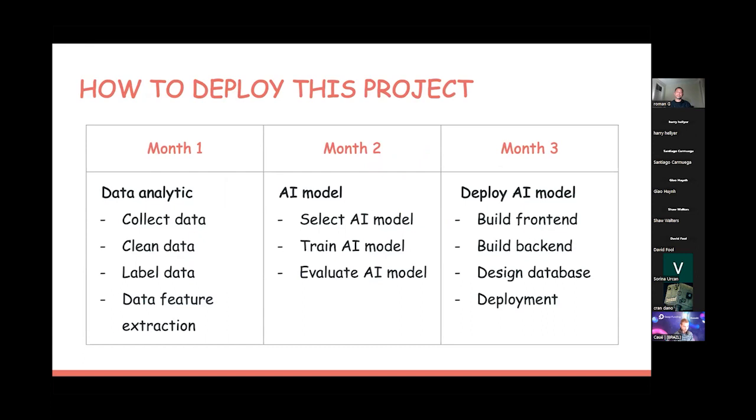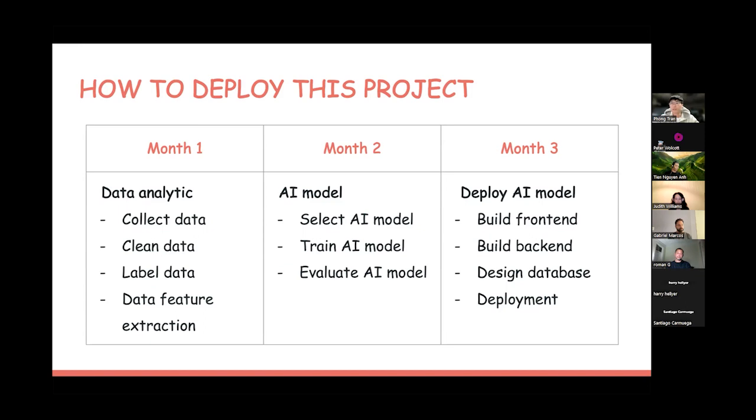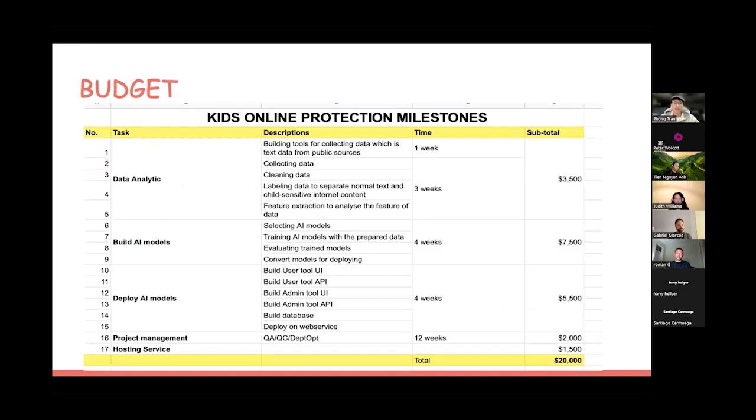This is the schedule of our project with three months. The first month we focus on data: collect, clean, label, and feature extraction. The second month is focused on AI: select, train, and evaluation. The third month is focused on software like extension, UI for parents, and the API to connect all of them. This is the milestone and budget we posted in the proposal on the Deep Funding website.